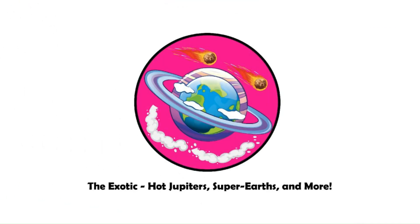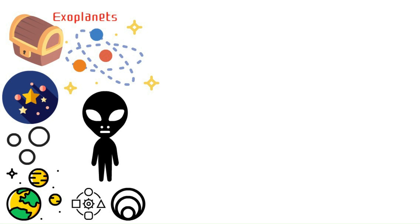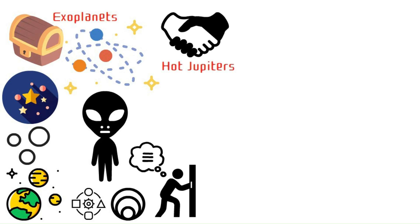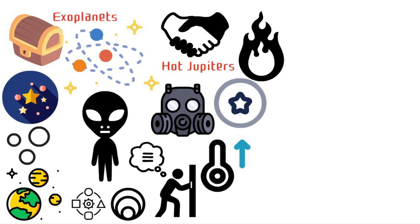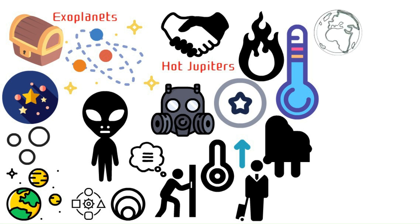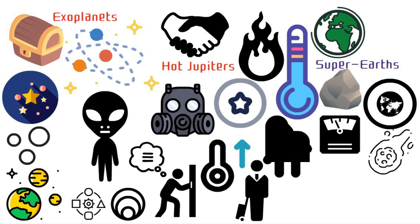The exotic, hot Jupiters, super-Earths, and more. Our solar system is just a tiny bubble in the vast universe, and beyond it lies a treasure trove of exoplanets, planets orbiting stars other than our sun. These alien worlds come in all shapes and sizes, pushing the boundaries of what we thought possible. Let's meet the hot Jupiters. Imagine a gas giant cranking up the heat. These scorching planets hug close to their stars, whipped by scorching winds and temperatures that could melt metal. Not exactly ideal for a vacation. In contrast, we have super-Earths. These rocky planets are Earth-sized or even bigger, but with a much denser composition. They might have thick atmospheres or even exotic surfaces, making them intriguing candidates for harboring life.